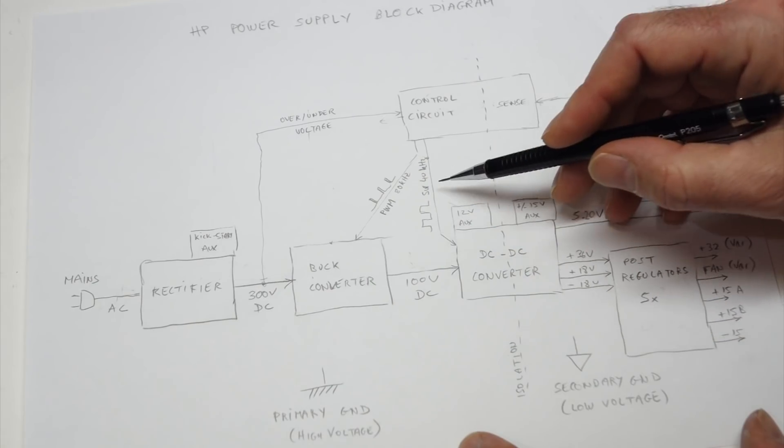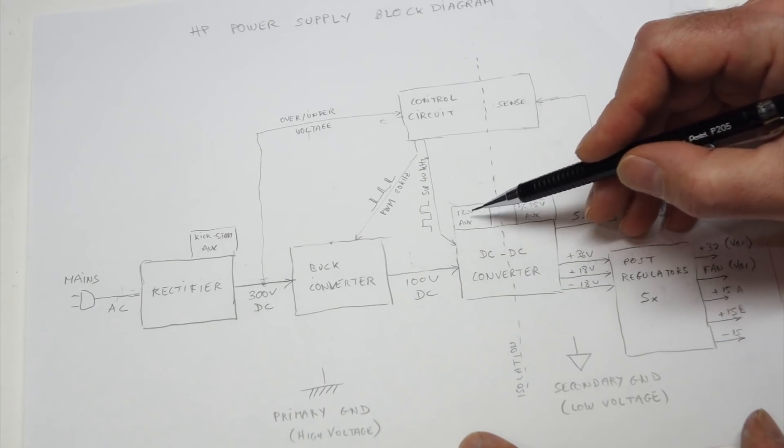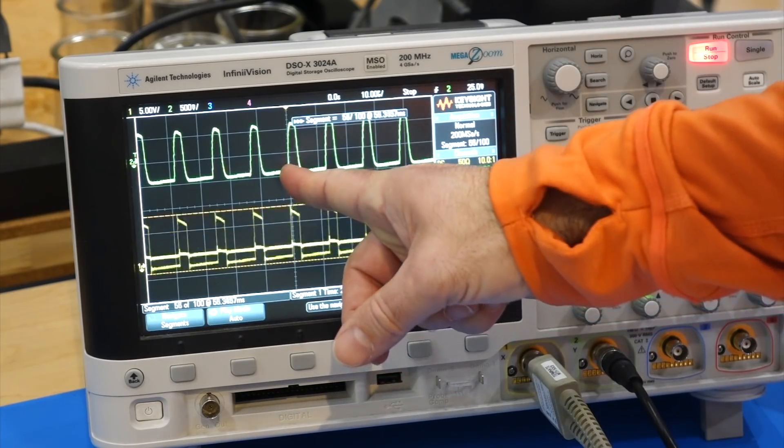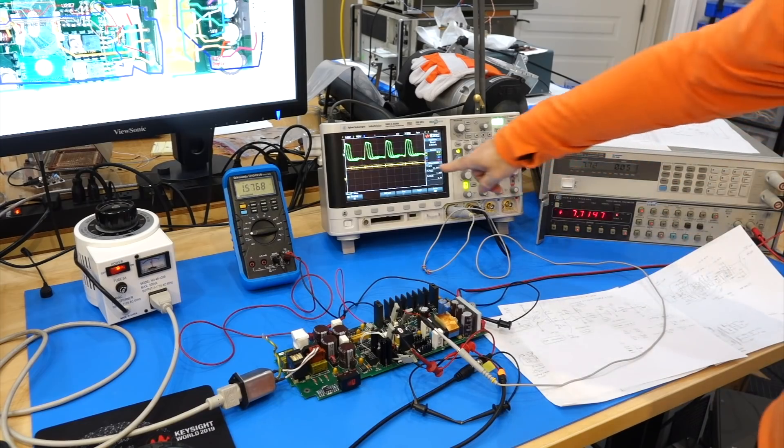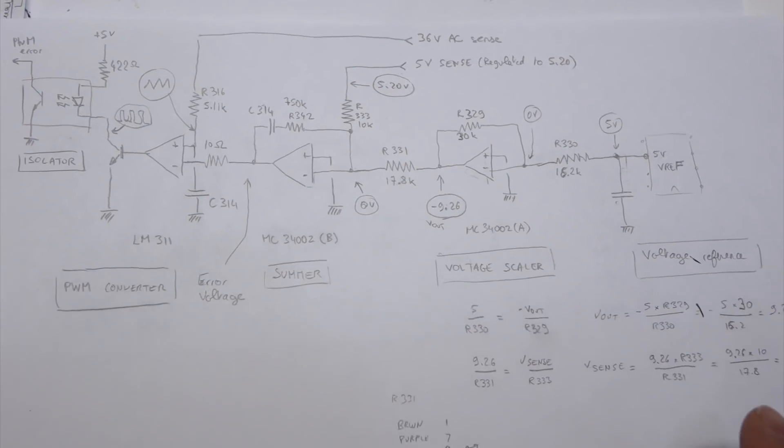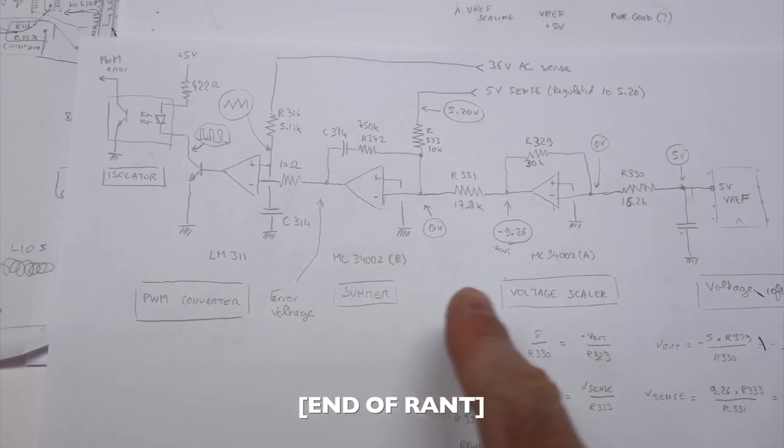So if you are a recapper, or a power supply swapper, look away. We are going to do it the CuriousMark way. Find out what has failed, blow a few more things while doing it, but replace only what's failed, and hopefully learn something in the process.